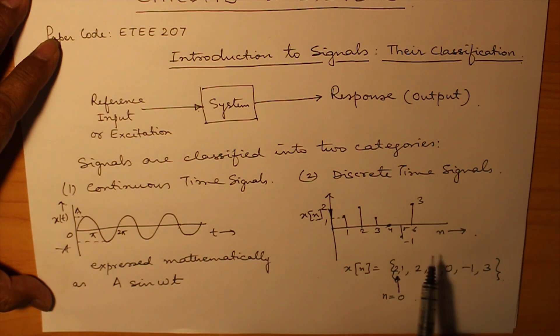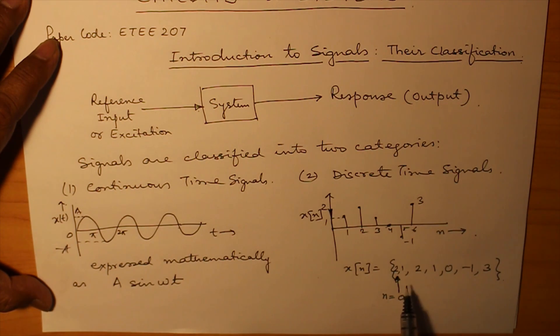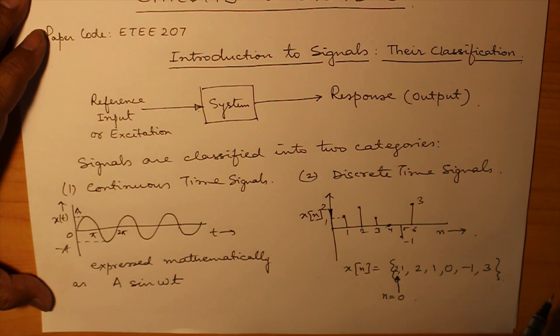So, this is how a discrete time signal, a random discrete time signal has been expressed. And this is the basic classification that in a continuous time signal, it can be expressed mathematically. Discrete time signal can be expressed in value form or sometimes when it is a uniform type of values, then we can obviously express it as u of k or something else. So, next move on to another classification of signals.